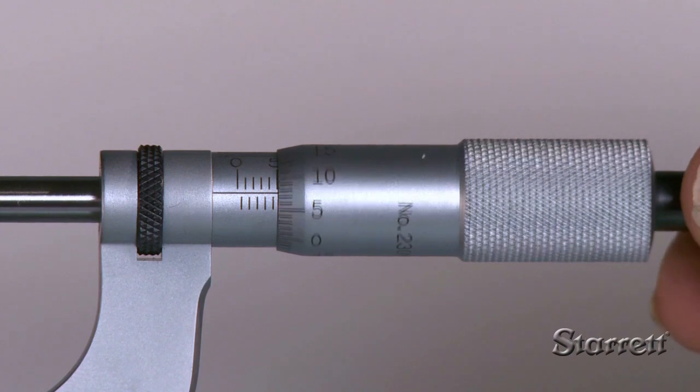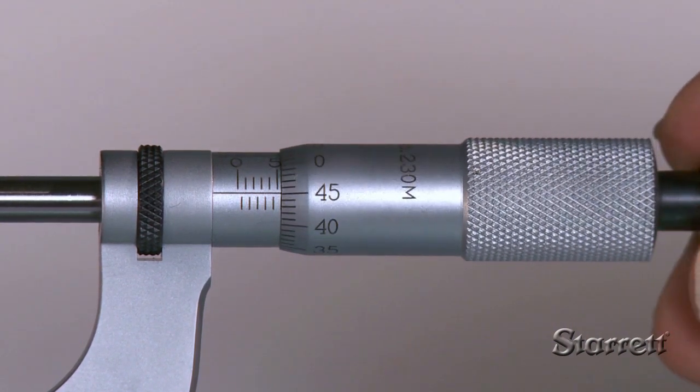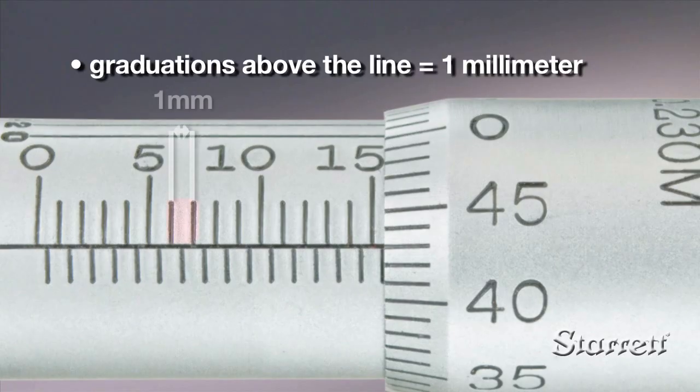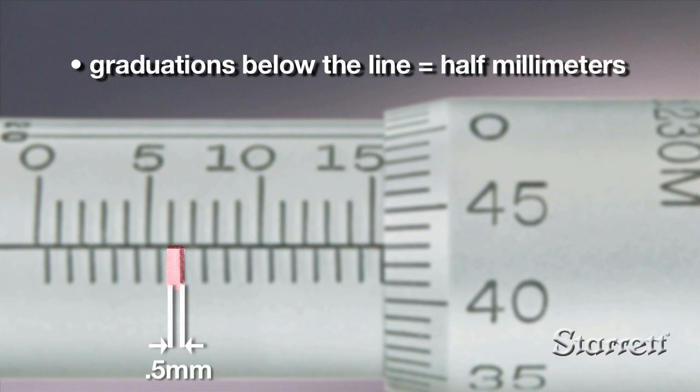The pitch of the screw thread is 0.5 or 1.5 mm, so a full revolution of the thimble moves the spindle 0.50 mm. The reading line on the sleeve is graduated in mm above the line. Each mm is divided in half below the line.